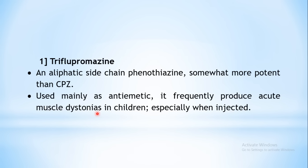Under phenothiazine there are three subclassifications depending upon the side chain. Aliphatic side chain phenothiazines are chlorpromazine and trichlorpromazine. Trichlorpromazine has similar properties but is more potent compared to CPZ — less amount is required to produce the same action. Mainly this drug is used as an antiemetic because of blockage of D2 receptors in the CTZ.